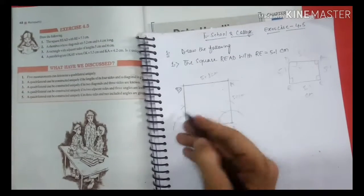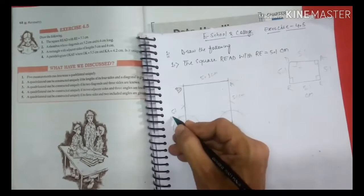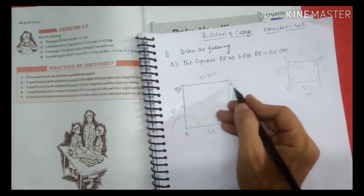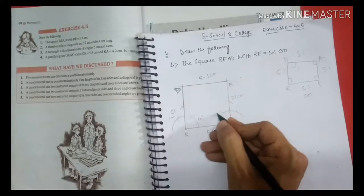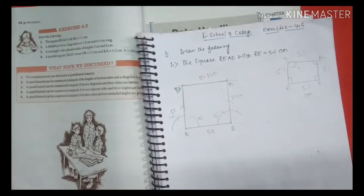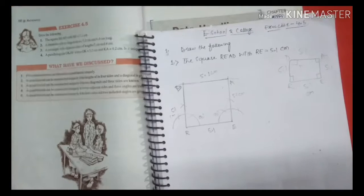5.1 cm, 5.1 cm. If you measure it, it will be 90 degrees, 90 degrees, 90 degrees, and 90 degrees. That's it. Are we clear now guys? Next video and next question. Thank you so much.